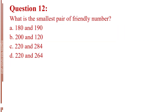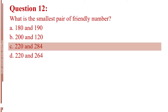Question number twelve. What is the smallest pair of friendly numbers? Letter A, 180 and 190. Letter B, 200 and 120. Letter C, 220 and 284. Letter D, 220 and 264. The answer is Letter C, 220 and 284.